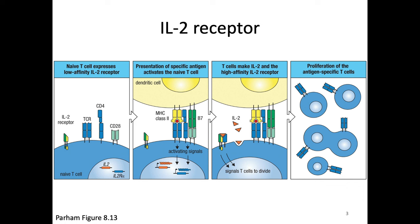We can also note that the IL-2 receptor has an additional chain that an activated cell can start making so it can really soak up IL-2 and get this signal really well — the alpha chain of the IL-2 receptor. That chain is also known as CD25. CD25 is important because it allows a cell to make the high-affinity IL-2 receptor, really soaking up all the IL-2. You already saw CD25 when we talked about DN1 through DN4 cells in the thymus during development.